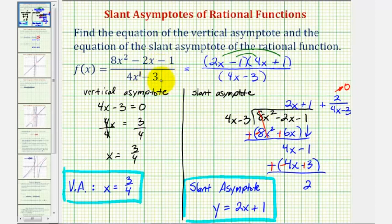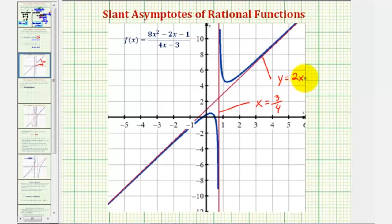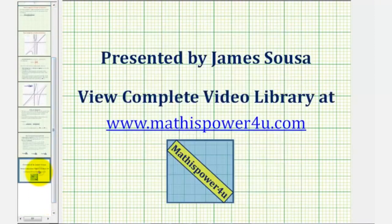Let's verify these results by looking at the graph of our rational function. Here we have our vertical asymptote with the equation x equals three-fourths, and here we have our slant asymptote with the equation y equals two x plus one. This graph verifies that our work is correct. I hope you found this explanation helpful.